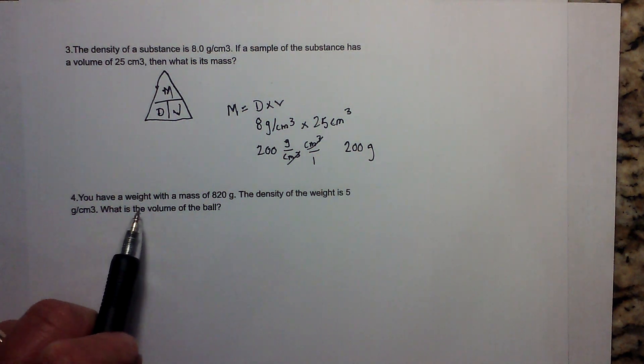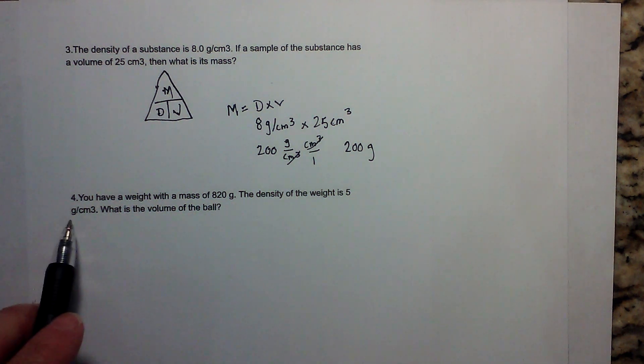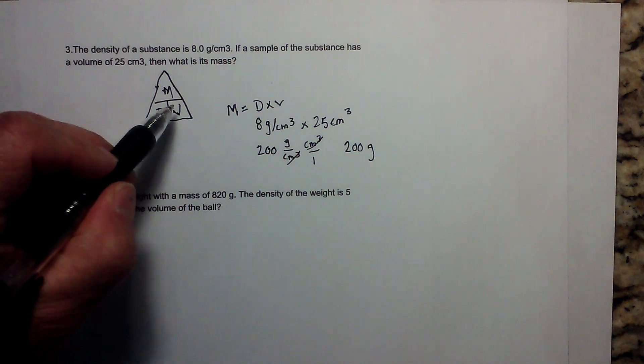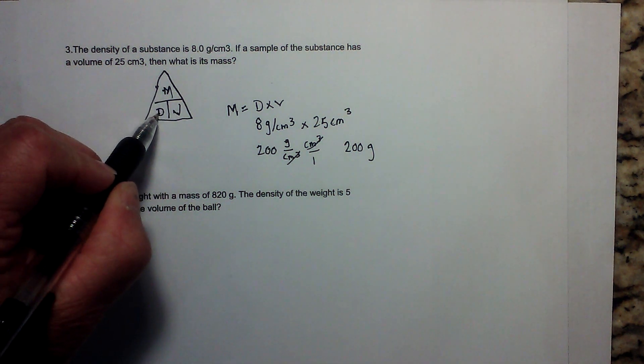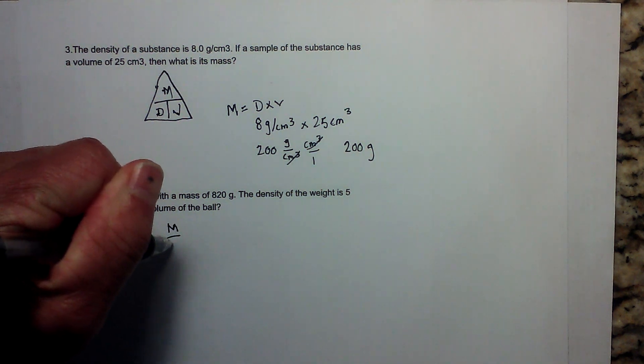Finally, you have a weight with a mass of 820 grams. The density of the weight is 5 grams per centimeters cubed. What is the volume? Again we'll go back to this - we're trying to find volume and it's mass divided by density. So V equals M over D.